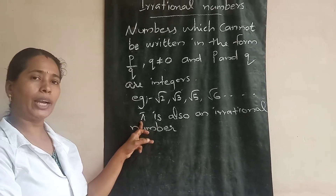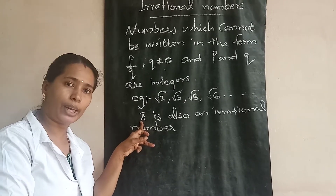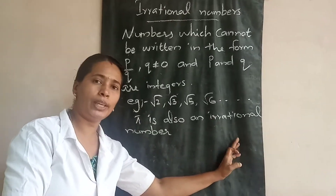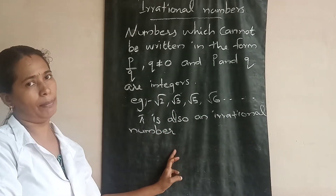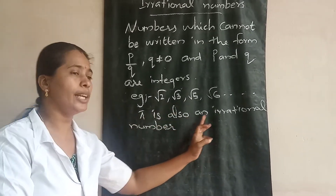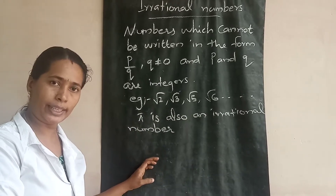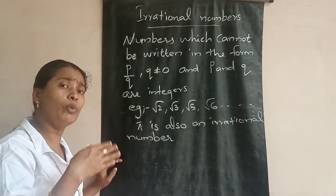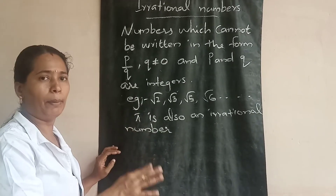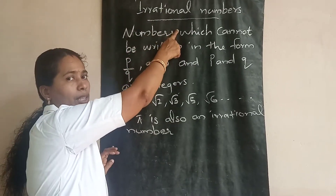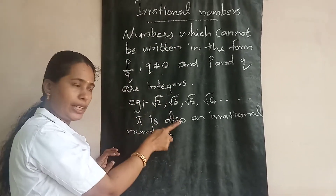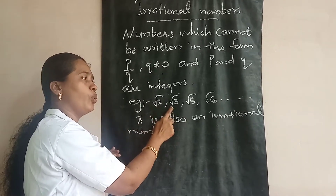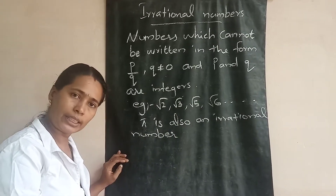Similarly, the value of pi that you studied in case of mensuration — pi is also considered to be an irrational number. So just get this idea for now on this topic: numbers which are not rational are irrational. Examples are pi, root 2, root 3, root 5, root 6, etc. — all irrational numbers. When we move to the third topic, we will get more ideas about irrational numbers.